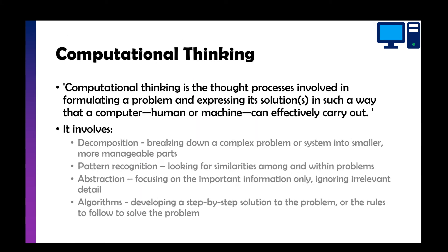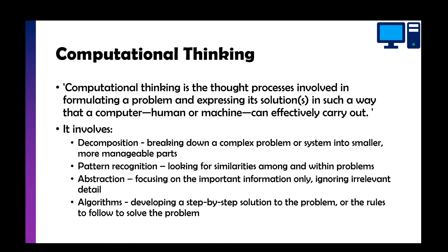So computational thinking is the thought processes involved in formulating a problem and expressing its solutions in such a way that a computer, whether it's a human or machine, can effectively carry out. So what that means is we need to follow a bunch of processes which I'm going to talk about in a second and express them in a way that somebody can effectively do it properly.